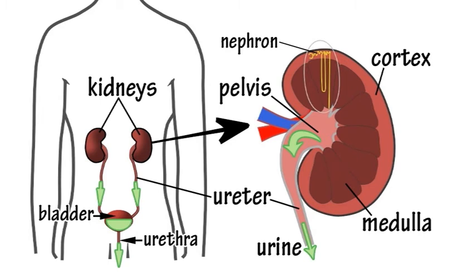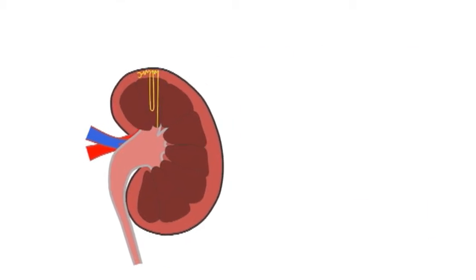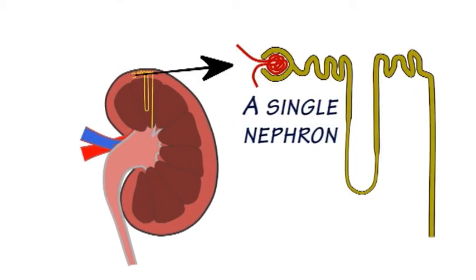Each kidney contains about a million tiny tubular structures called nephrons, which are the basic functional parts of the kidneys.